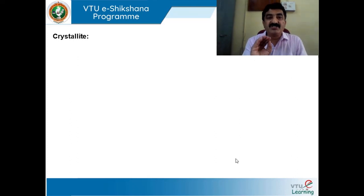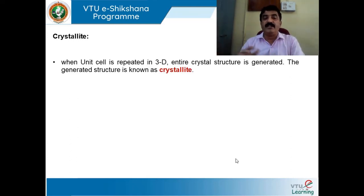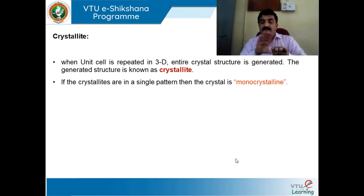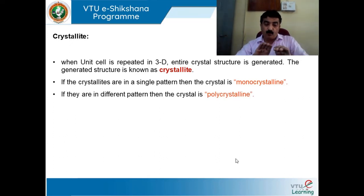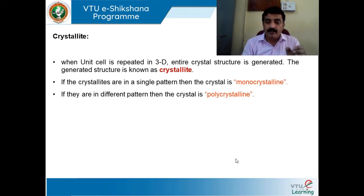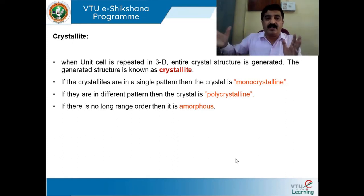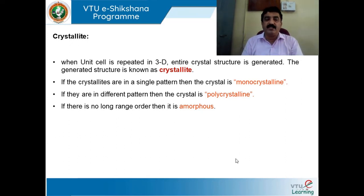Now, a little bit about crystallite and the Scherrer equation. When unit cells are repeated in three dimensions, they generate the crystal — that whole structure is a crystallite. If the crystallites are all in a single pattern — only one type of unit cell — it is monocrystalline. If there are multiple types of unit cells combined, it is polycrystalline. If there is no long-range arrangement, it is amorphous. So: if there is long-range orderness, it is a crystallite; if all unit cells are alike, it is monocrystalline; if of multiple types, it is polycrystalline; if there is no long-range arrangement, it is amorphous.